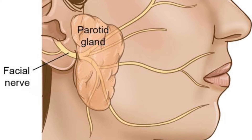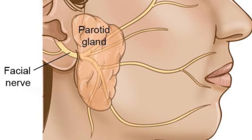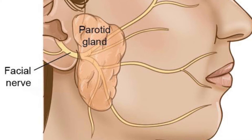Bilateral parotid masses are usually lymphadenopathy, Warthin's tumour, lymphoepithelial cyst, Sjögren's syndrome, and malignant tumours like acinic cell carcinoma. Multiple painless masses in a single parotid gland could be Warthin's tumour, lymph node, or benign and malignant tumours.